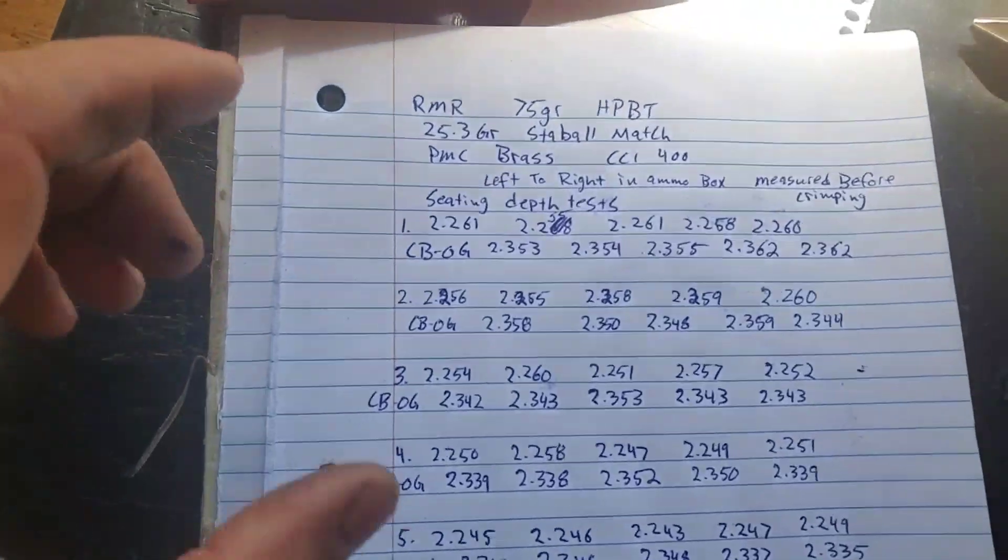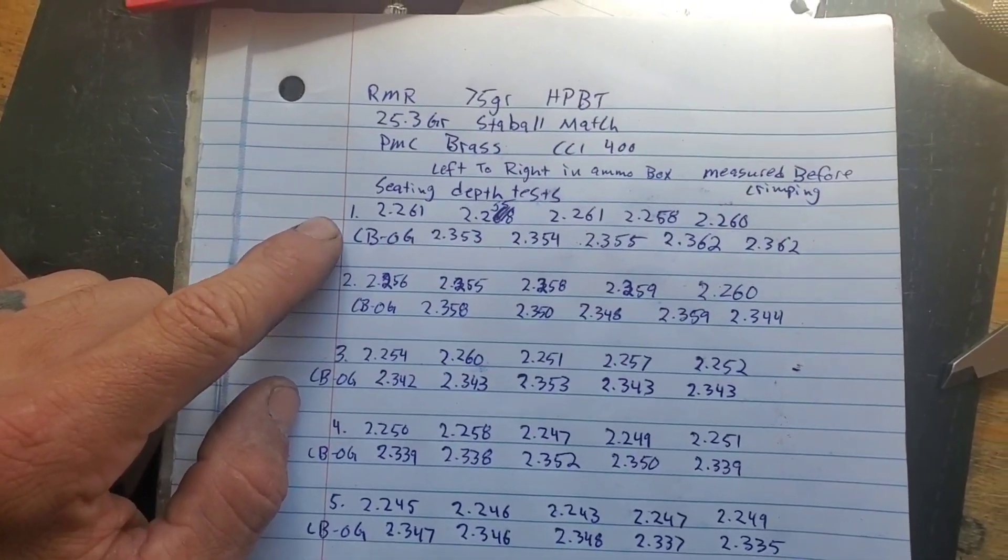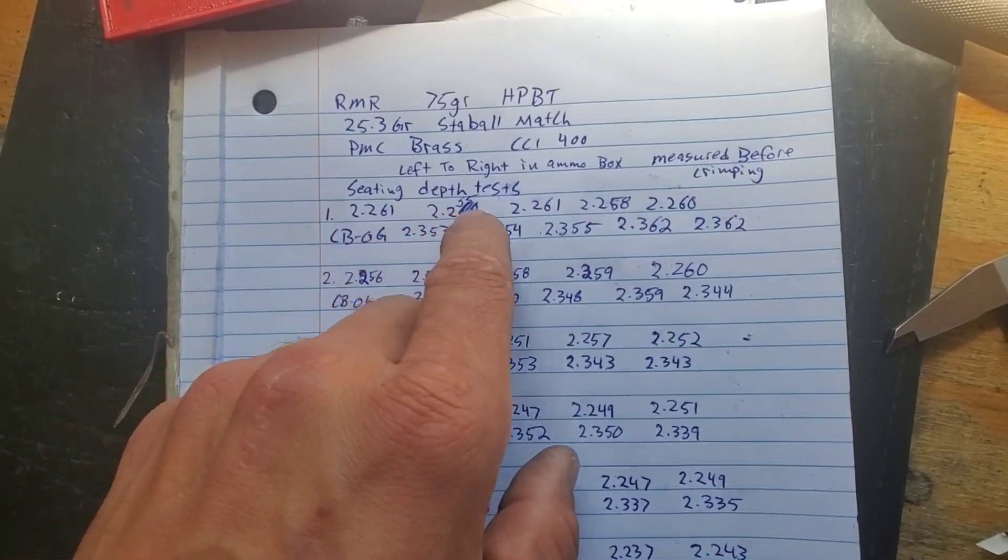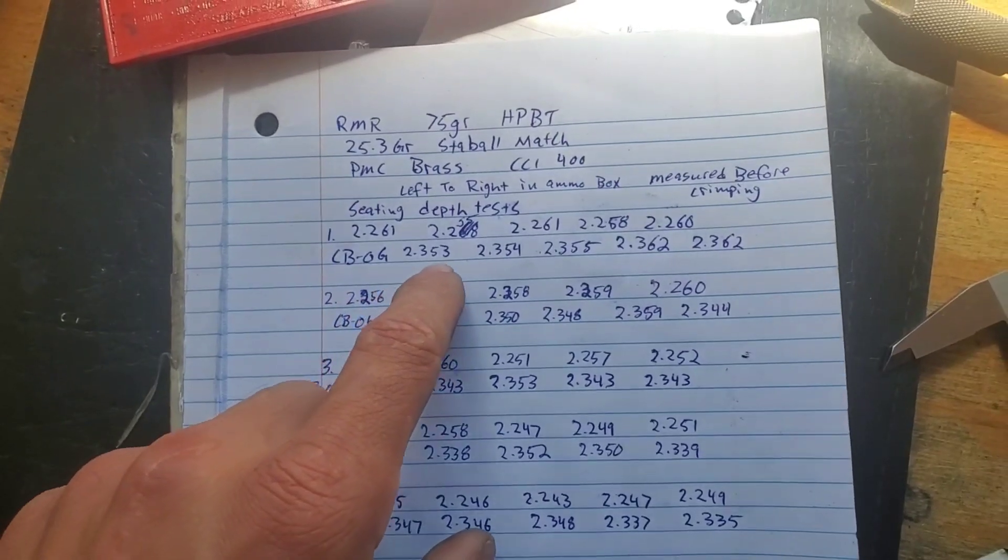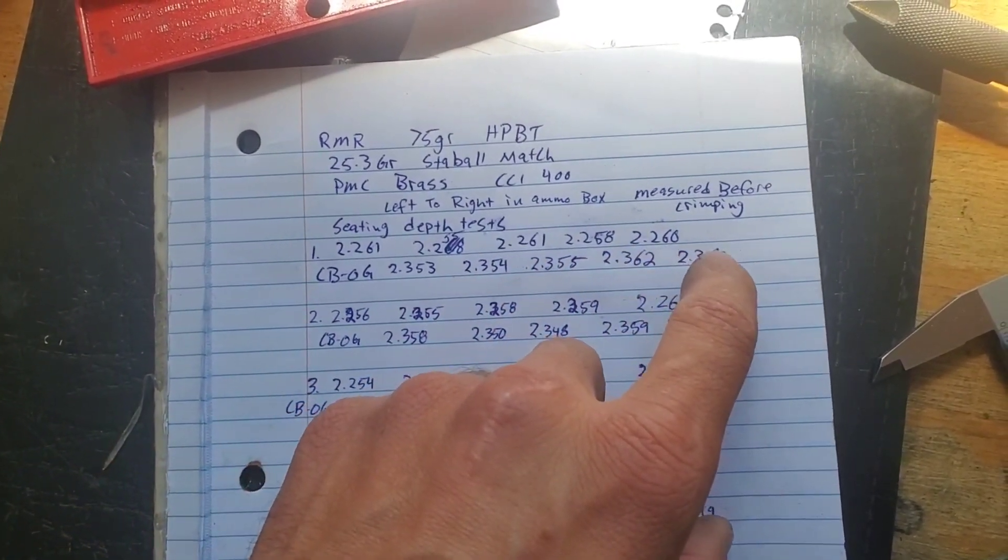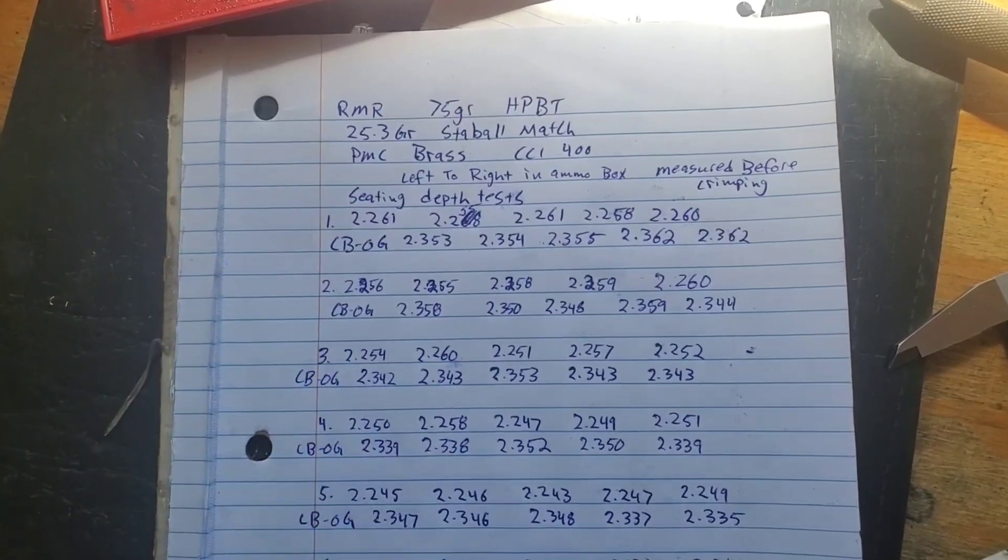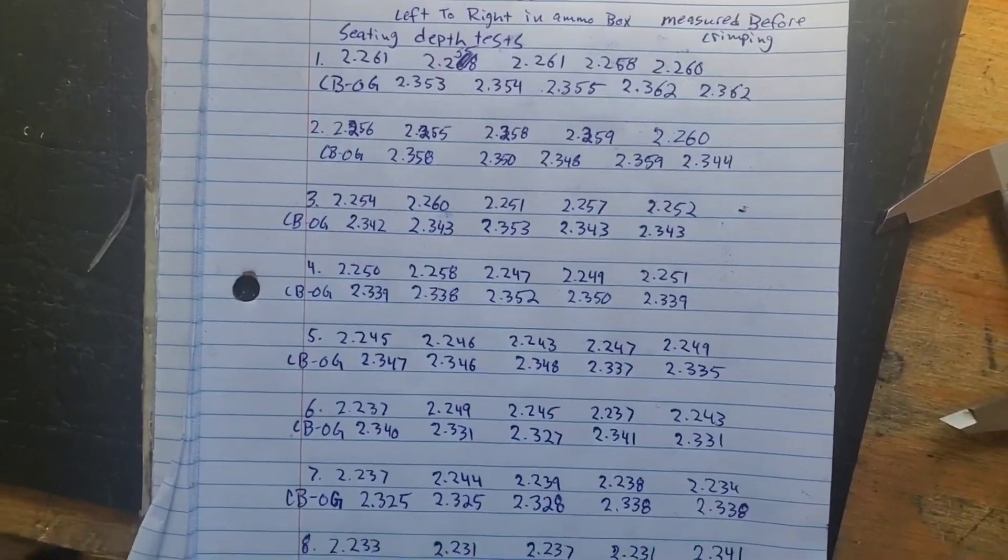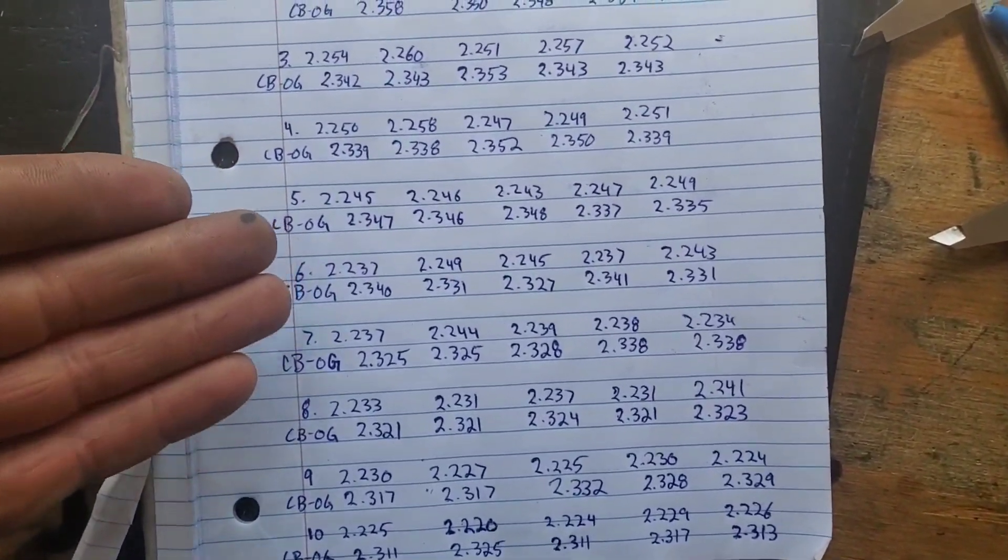Didn't go super crazy here, but what I've done is I've gone one notch per five bullets and then taken measurements of the overall lengths and then the cartridge-based ogive measurements of each. And what you can see by this is that these are very, very inconsistent bullets. And these are very, very cheap bullets.